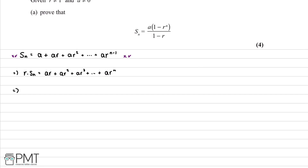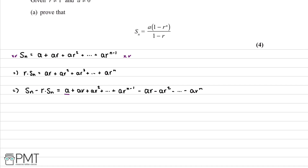The next step is to find the difference between the two equations. We take Sn and subtract r times Sn, which equals a plus ar plus ar squared plus everything up to ar to the n minus 1, then subtract negative ar, negative ar squared, and everything up to ar to the power of n.